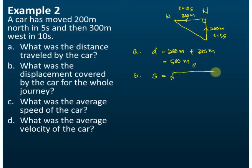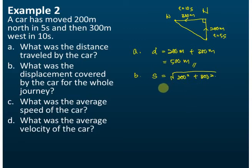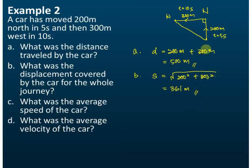The displacement is equal to the square root of 200 squared plus 300 squared. This comes from the Pythagorean theorem. By using your calculator, you should get the answer 361 meters. So this is the displacement — the shortest distance between the initial point and the end point.